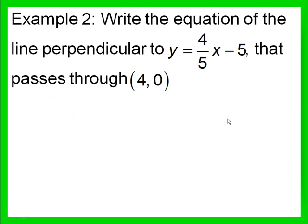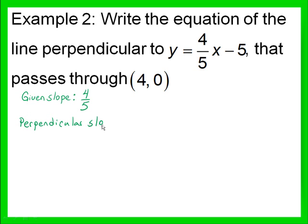So the equation is y equals negative 1x plus 4. Example 2: Write the equation of the line perpendicular to y equals 4 fifths x minus 5 that passes through the point 4, 0. Once again, we need to find our given slope. The given slope is the coefficient of x, so that's 4 fifths. Next, find the perpendicular slope. The perpendicular slope will be the negative reciprocal of 4 fifths, so that will be negative 5 over 4.